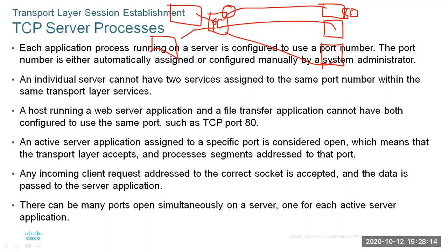The socket has to do with the IP address and the port number — the source IP and source port number, and then the destination IP and destination port number. That's a socket. So we have this session open for communication between my PC and the web server. I'm also doing FTP on port 21, so my PC generates another port dynamically, creating a different session and a different socket.